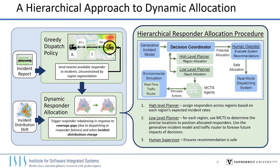Putting this together gives us a hierarchical approach for dynamic responder allocation. After dispatching causes a coverage gap, or a shift in incident distribution is predicted, a high-level planner first determines how many responders should be allocated to each region and which responders to move if the allocations have changed. Then a low-level planner is invoked for each region, which uses MCTS to determine where exactly the assigned responders should be located within that region. This dynamic allocation procedure is repeated each time a relevant environmental update is detected, such as a coverage gap or an ambulance failure.